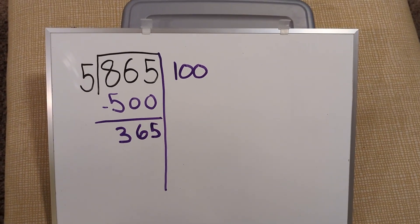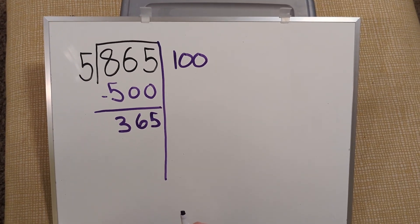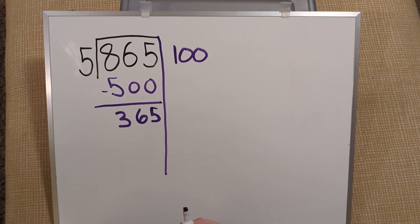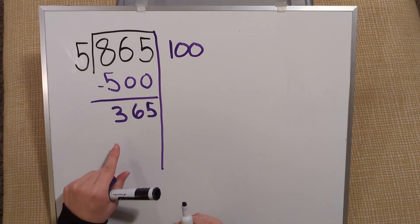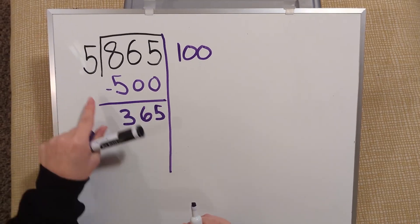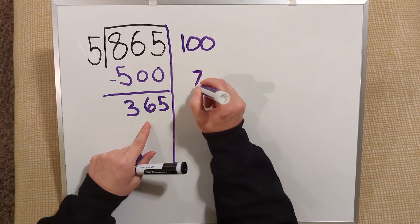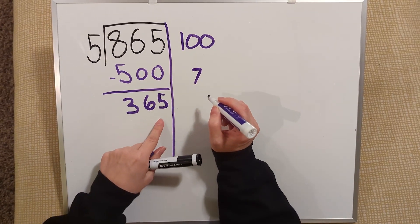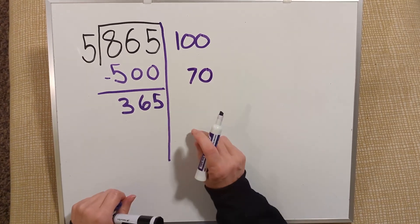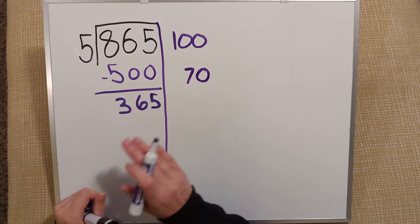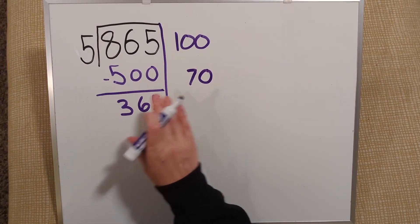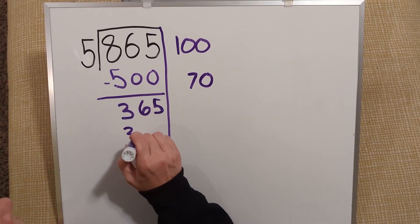365 is still a pretty big number. I'm not sure how many times 5 can go into it, but I do know that my base problem of 36, that 5 can go into 36 7 times. So 5 can go into 365 70 times. 70 times 5 is 350.